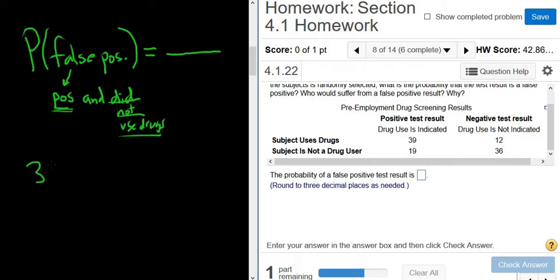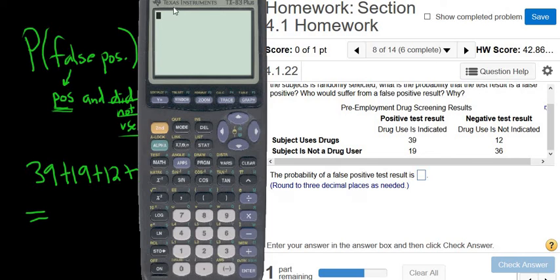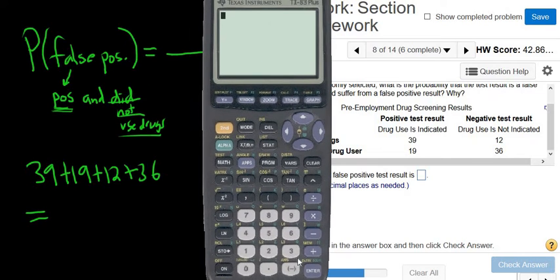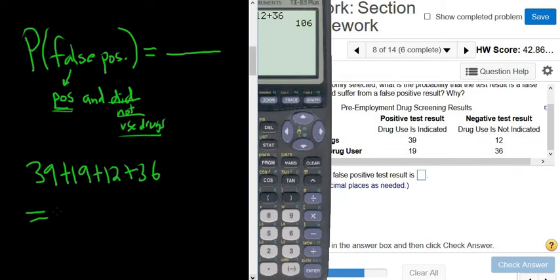So let's do that. So 39 plus 19 plus 12 plus 36. I'm not going to take any chances because I haven't done this yet, so I'm putting this in the calculator. Let's see. So 39 plus 19 plus 12 plus 36. Let's do it. So 106. That's the total number of results.